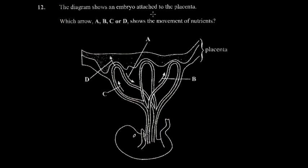The next question shows a diagram of an embryo attached to the placenta, and asks which arrow — A, B, C, or D — shows the movement of nutrients. To answer this, identify the role of nutrients in the growth of an embryo. Nutrients are acquired by the embryo, so you're expecting an arrow going into the fetus. The umbilical cord goes inside and connects to the placenta's rich network of blood capillaries that supply nutrients and oxygen.